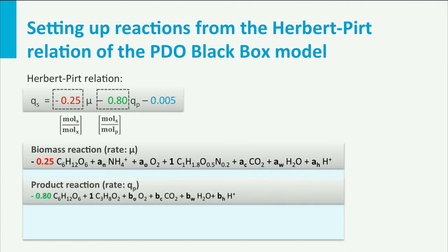In a similar way we can formulate the black box product reaction, where according to the Herbert-Pert relation of the PDO black box model, 0.80 mol glucose is needed to make 1 mol PDO. The other reactants are oxygen, carbon dioxide, water, and proton, with stoichiometric coefficients B_O, B_C, B_W, and B_proton.